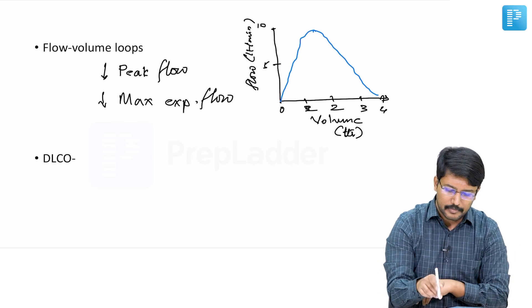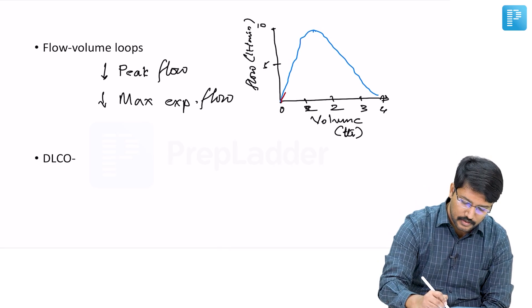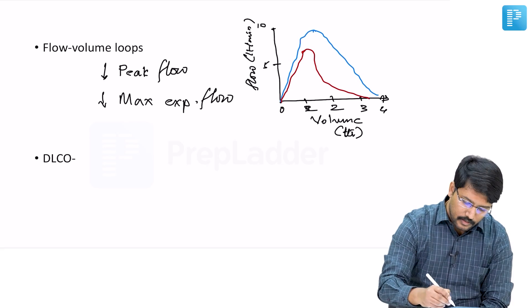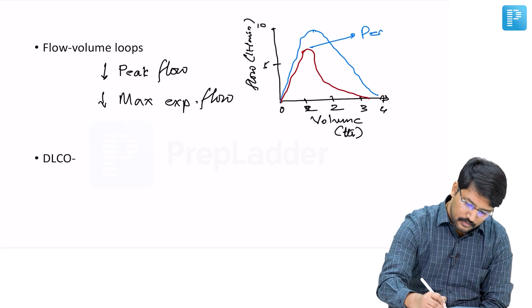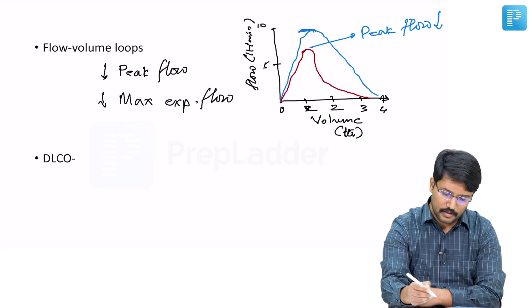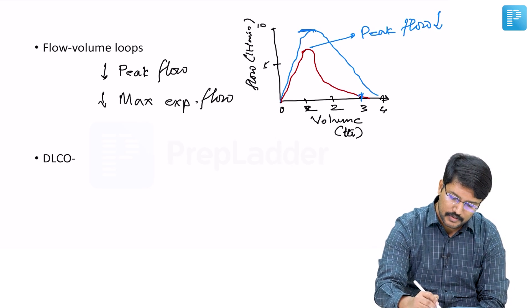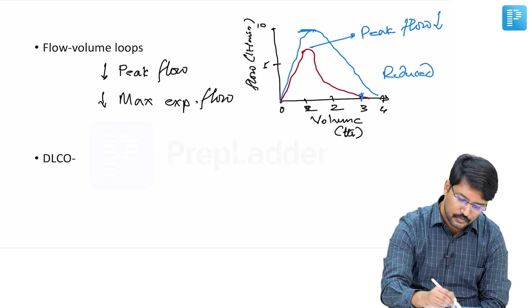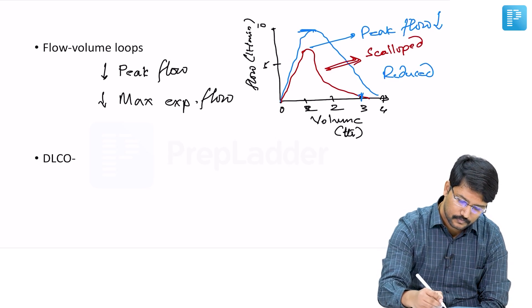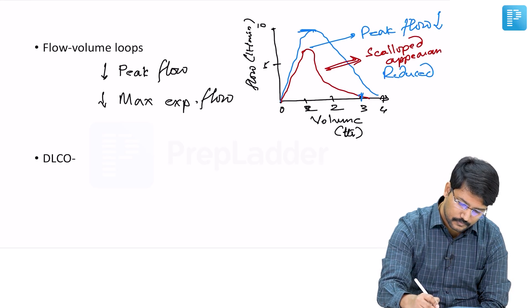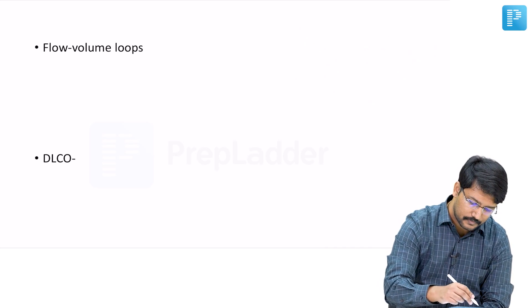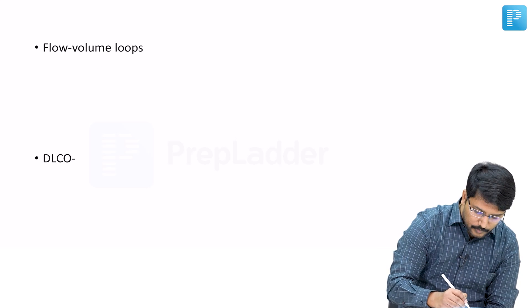But in a patient with bronchial asthma, you notice that the peak flow is reduced and even the maximum expiratory flow is reduced, giving rise to a scalloped appearance. The scalloped appearance of flow-volume loops is seen in patients with bronchial asthma.